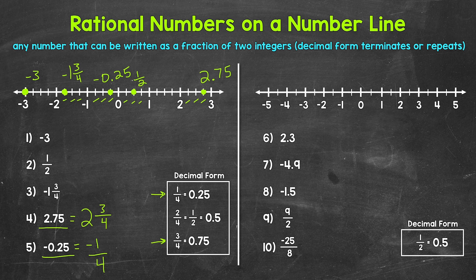Let's move on to numbers six through ten. We are going to be working with a different number line here, and this number line is split into halves. So as far as positives, we have one half, one, one and a half, two, two and a half, and so on. And then as far as negatives, we have negative one half, negative one, negative one and a half, negative two, negative two and a half, and so on.